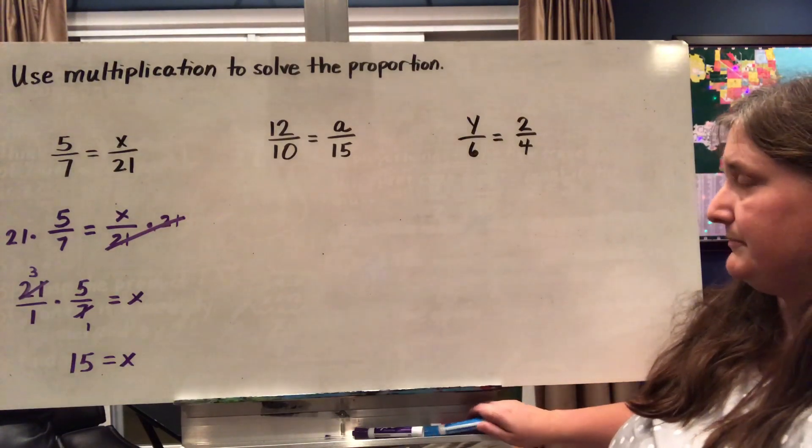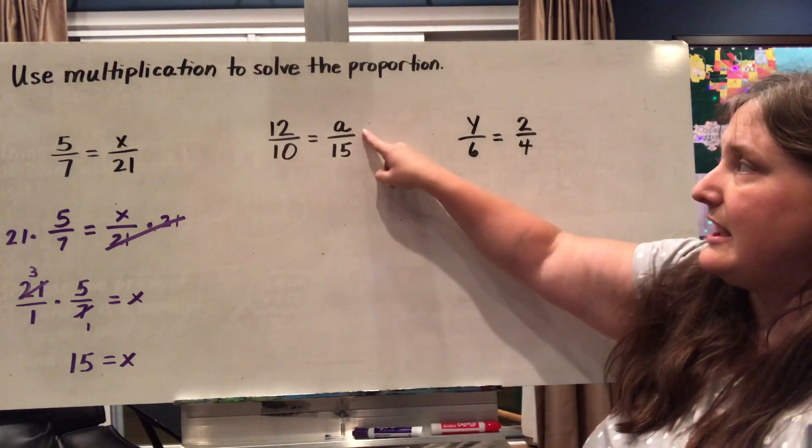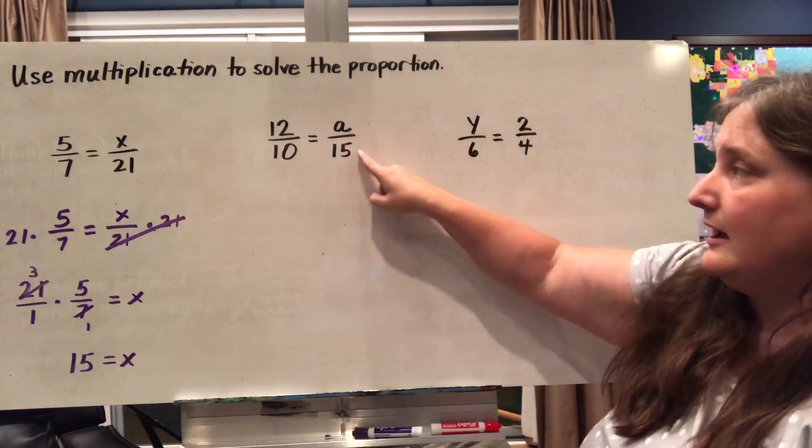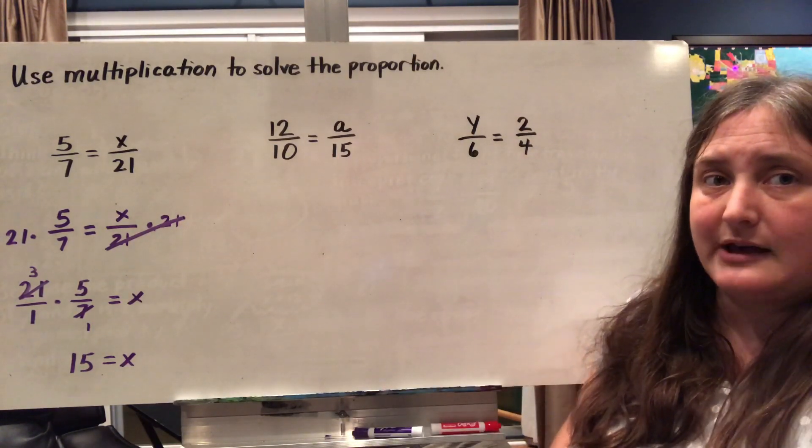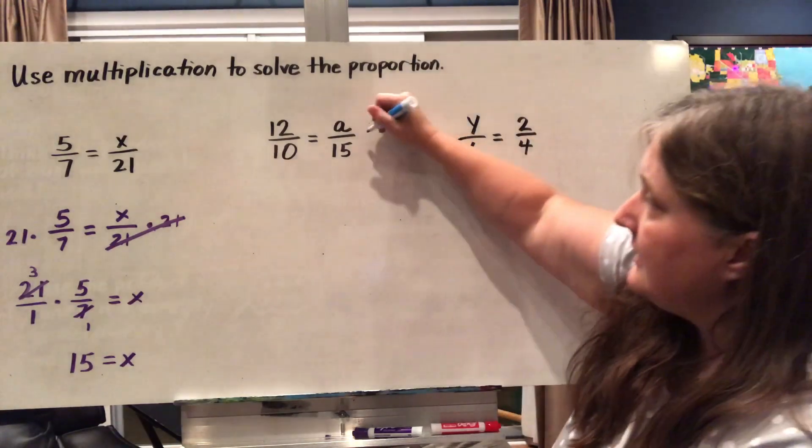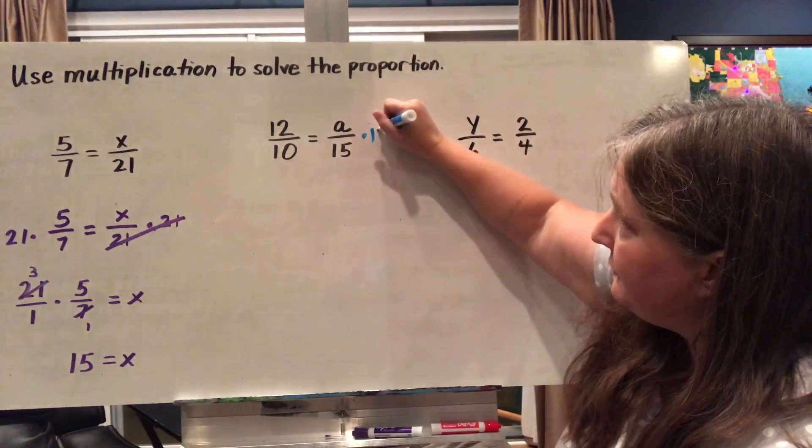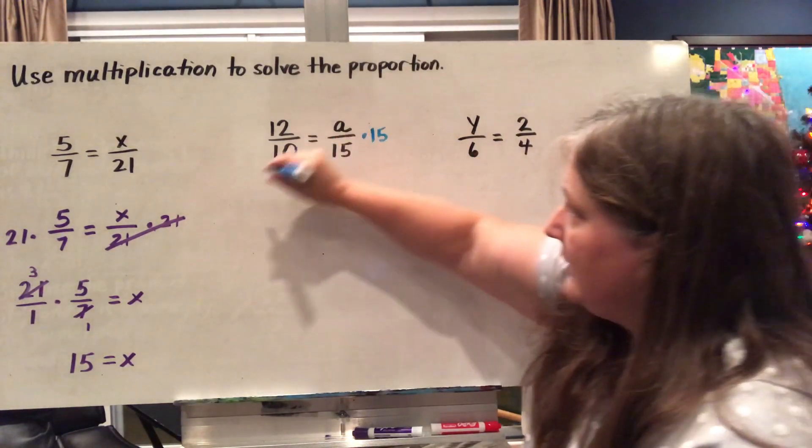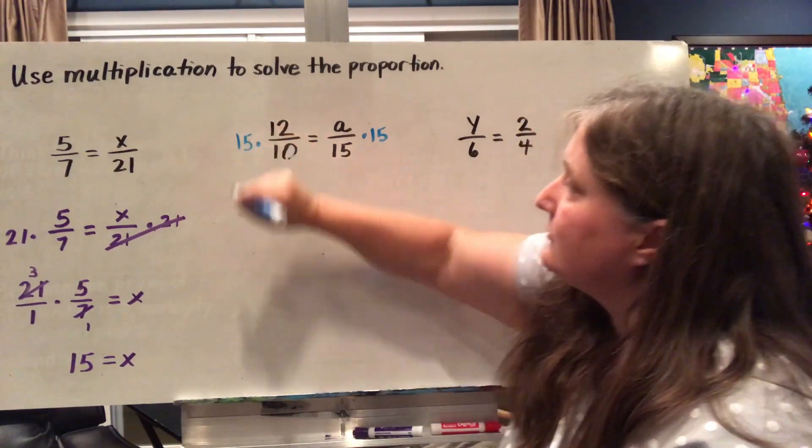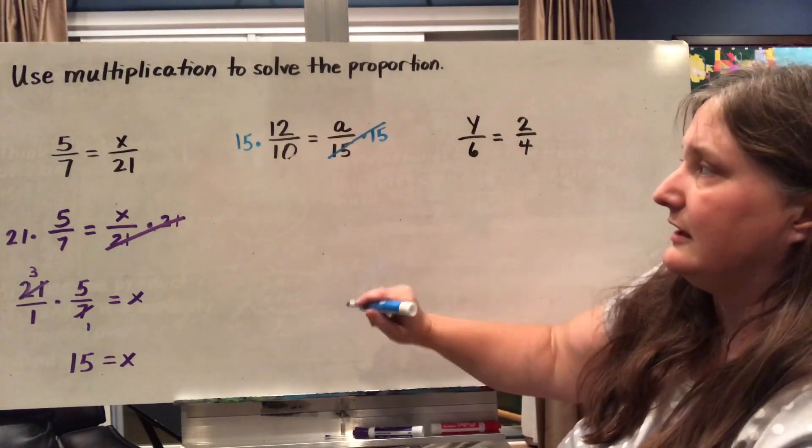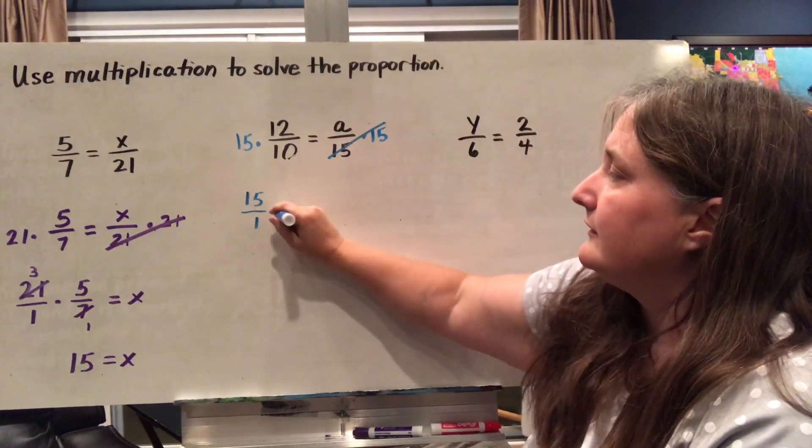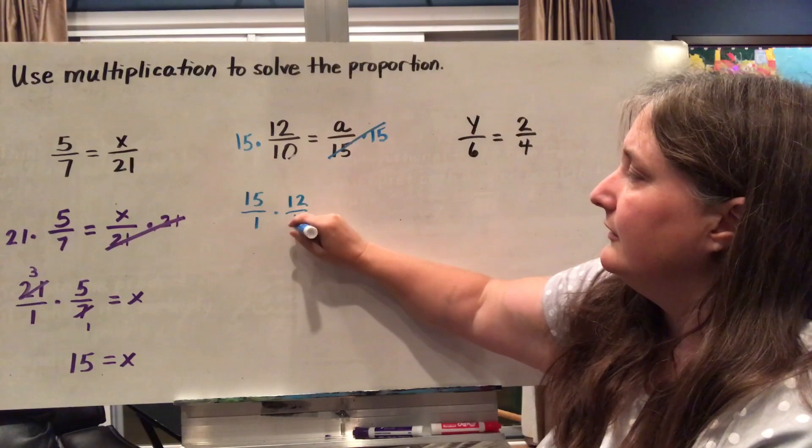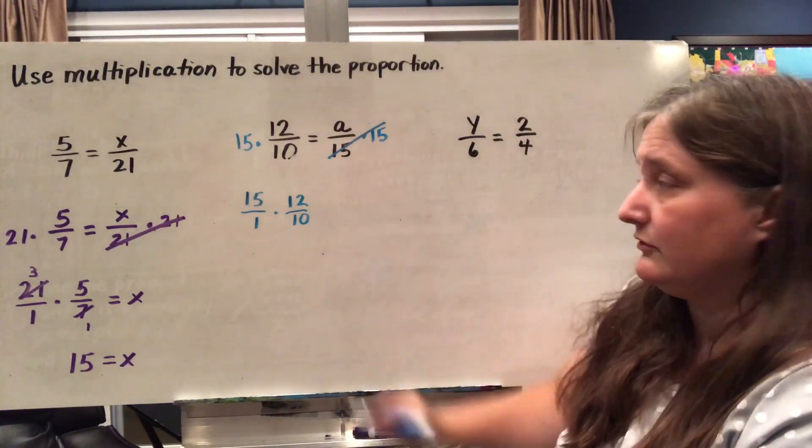Let's try this with another problem. So here we have a divided by 15. On this side we have 12 divided by 10. We want to get a by itself, so we're going to multiply by 15 on both sides because our multiplication property of equality says that's okay as long as we do it to both sides. So here it cancels out. On this side I have 15 over 1 times 12/10. I can do some cross reducing here.